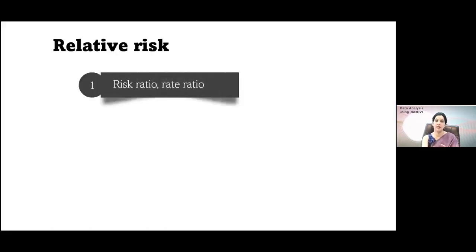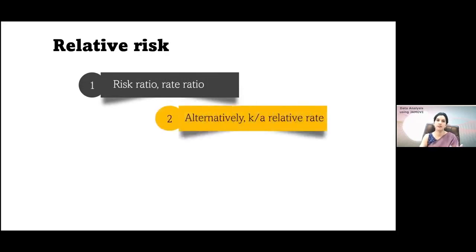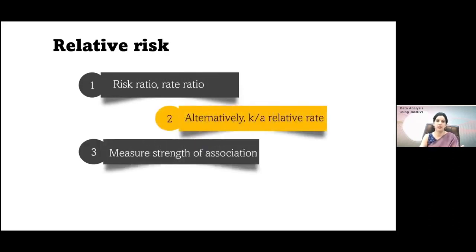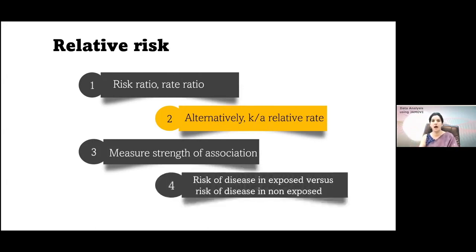Relative risk is also known as the risk ratio or rate ratio, and alternatively we call it a relative rate. It measures the strength of association. It is usually done in an incidence study or cohort study where you have a group of people and a comparison group, divided on the basis of exposure versus no exposure of any risk factor. Then you follow them up for the development of a particular outcome, measuring the risk of disease in exposed versus non-exposed.